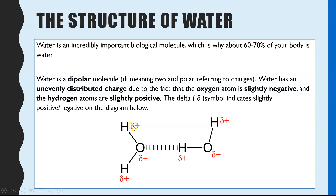On the diagram, these delta symbols mean slight positive and slight negative — so it's not a full positive or full negative charge. The oxygen has a slight negative charge and the hydrogens have a slight positive charge. Because of these charges, hydrogen bonds can form between the oxygen and hydrogen of neighbouring water molecules.